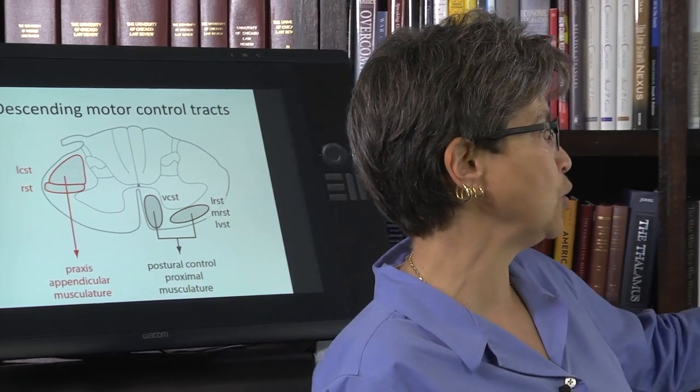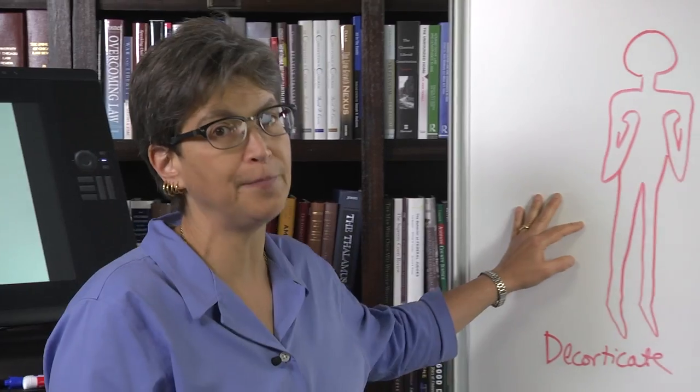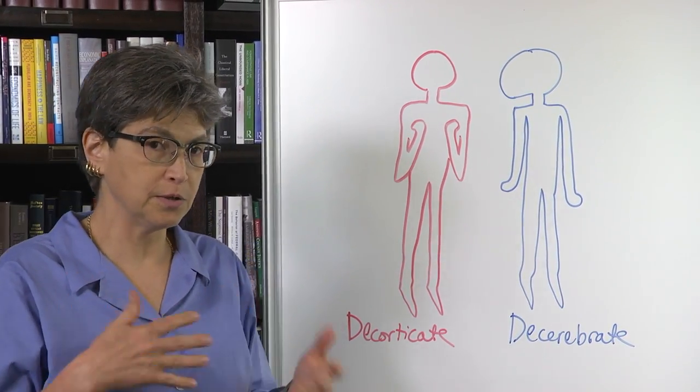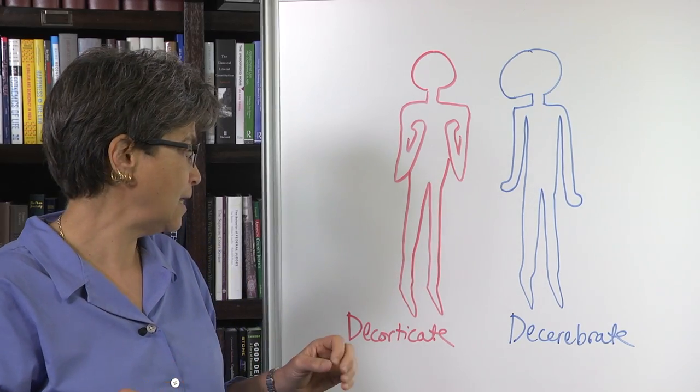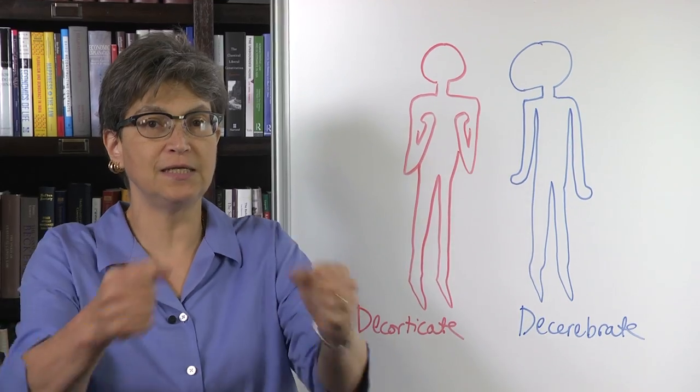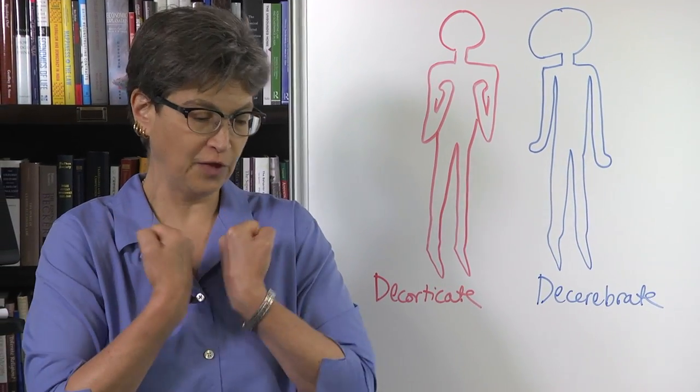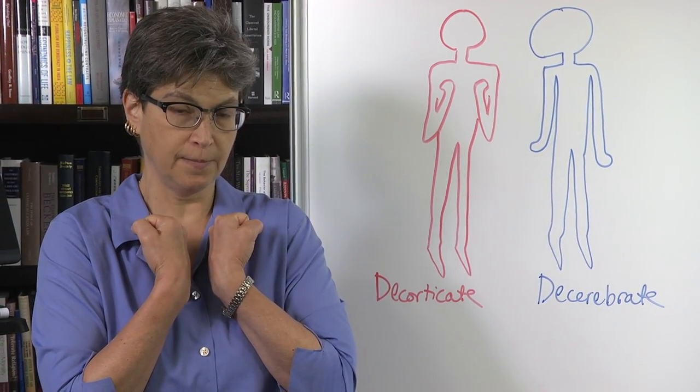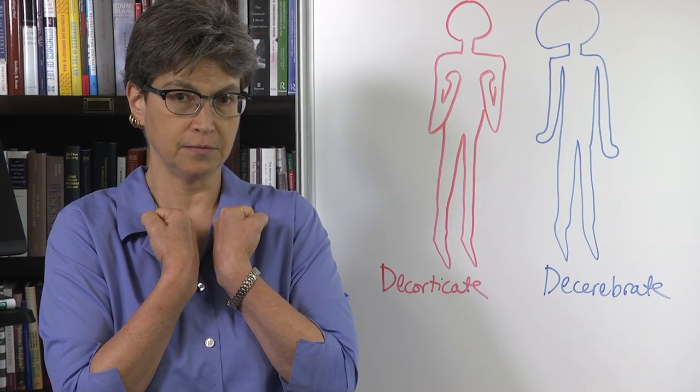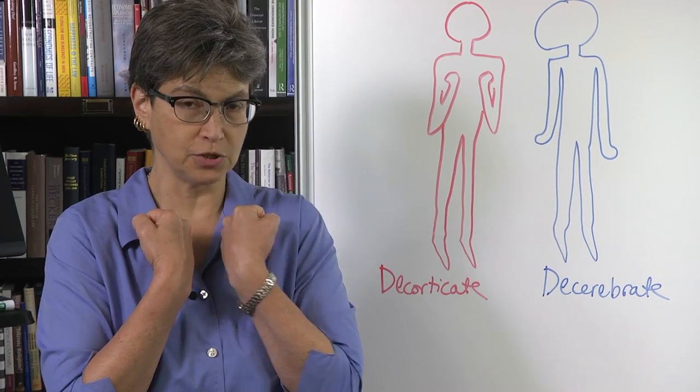One is the decorticate. The decorticate happens in humans with high midbrain diencephalon lesions. And the decorticate posture is the legs are extended and the arms are flexed with the hands adducted in. Okay? So this is the decorticate posture.